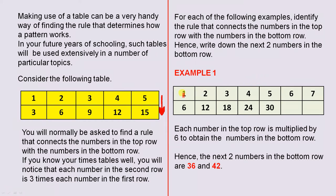Example 1: you've got the numbers from 1 to 7 and these are the numbers in the bottom row for the first five numbers. We need to find the sixth and seventh. If we look carefully, we notice that each number in the top row is multiplied by 6. 6 6s are 36 and 6 7s are 42. So here we have 36 and here we have 42.